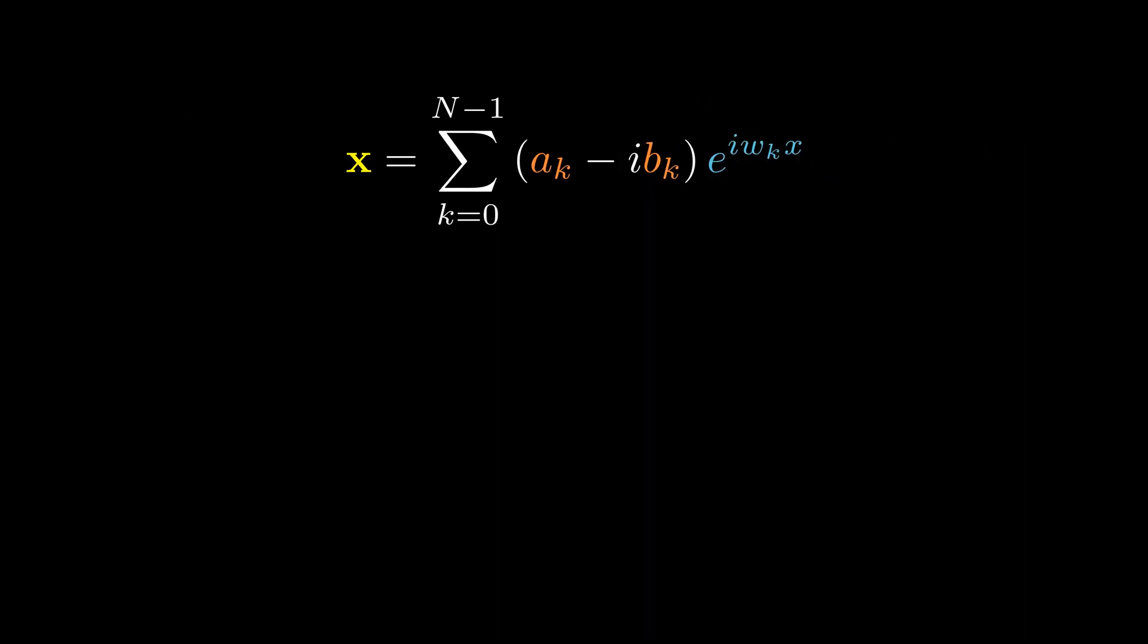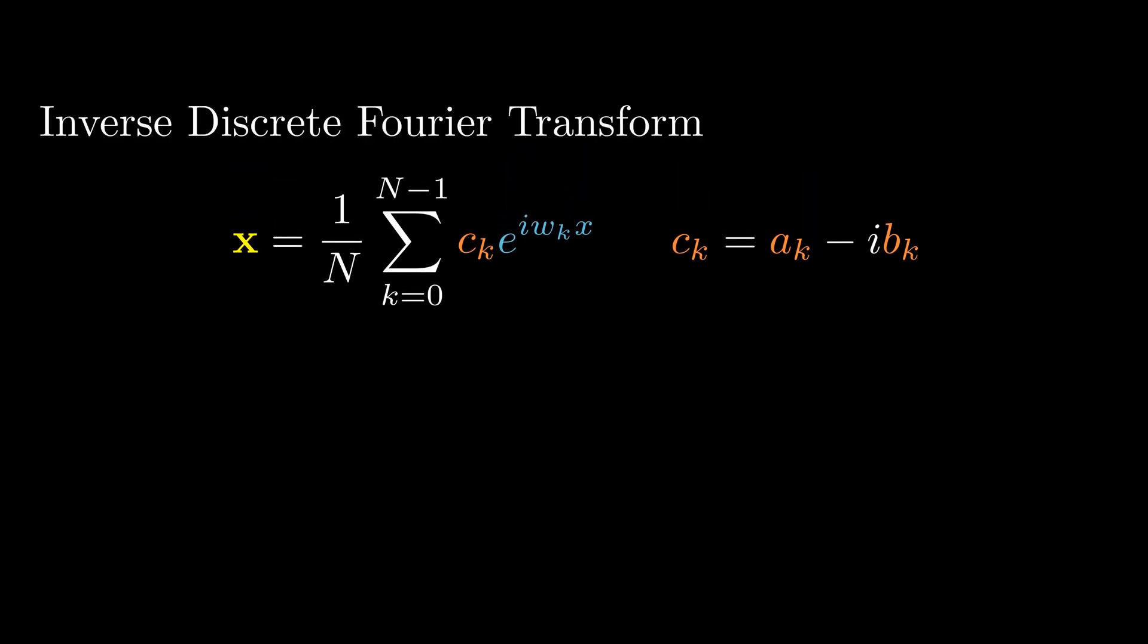We now see that these two parts turns out to be the same. Let's bring the normalization factor back and simplify the coefficient as c k. This gives us the inverse discrete Fourier transform.